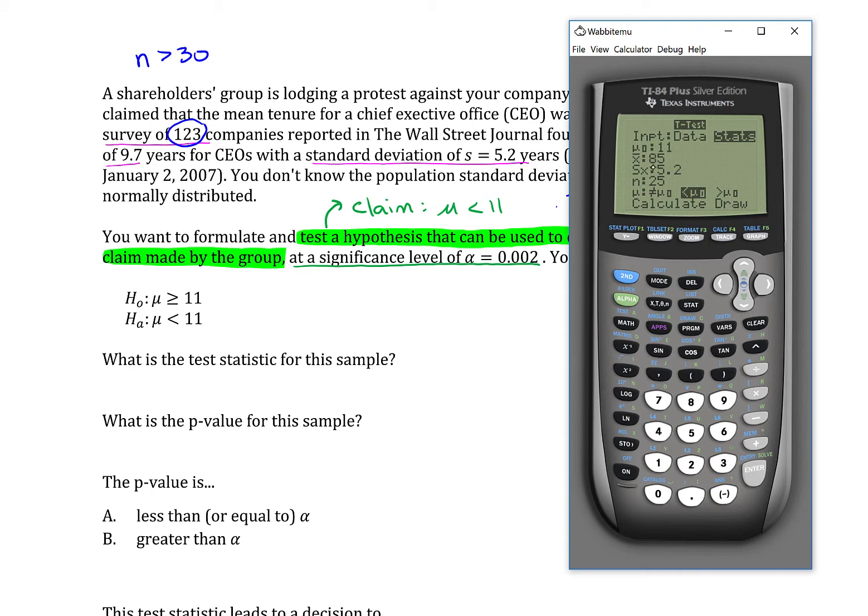Mu sub zero is the mean from the null hypothesis. So 11 will put that in. X bar, that's the mean of the sample, and that was given as 9.7 years. SX is the standard deviation of our sample. And n, of course, is the number of items in the sample.